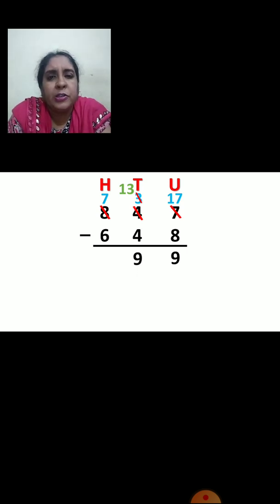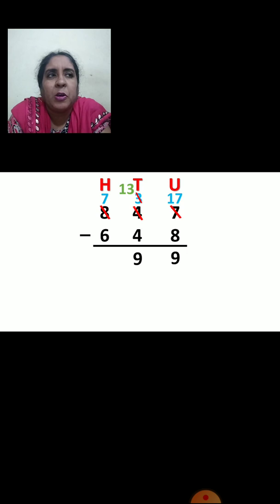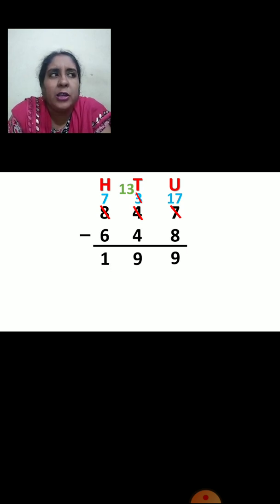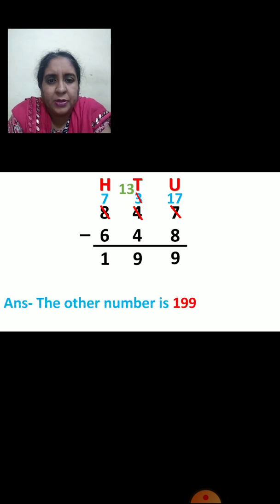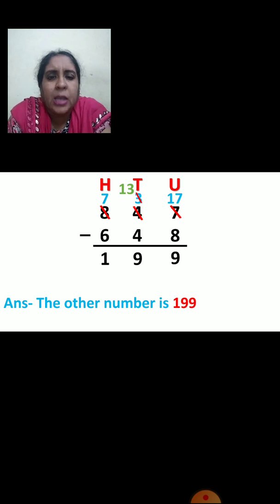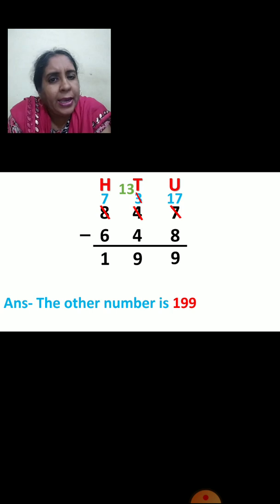Now we will see hundreds place. Seven minus six — seven minus six is one. So your answer is one ninety-nine. Let us write the answer statement: the other number is 199.